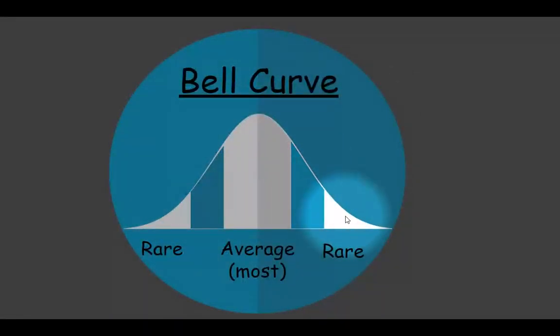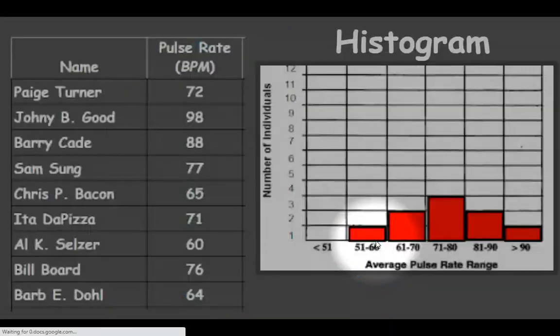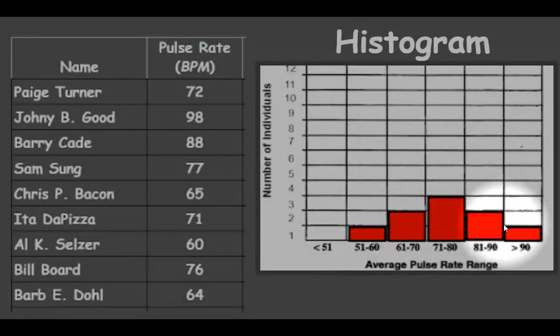A bell curve is where it gets its name, it looks kind of like a bell, right? And the average or most people are going to fall in the center of the bell curve, and you do have two extremes or rares that are below or above the average. And we kind of see that here with the pulse rates.